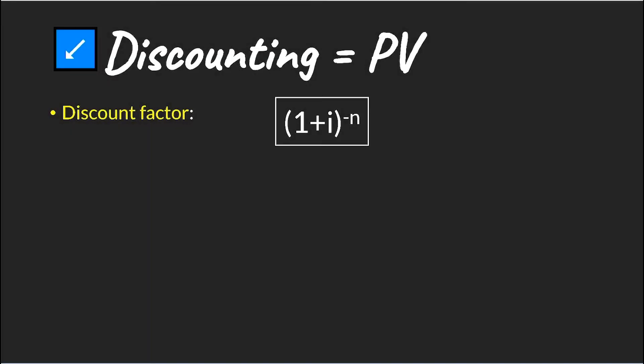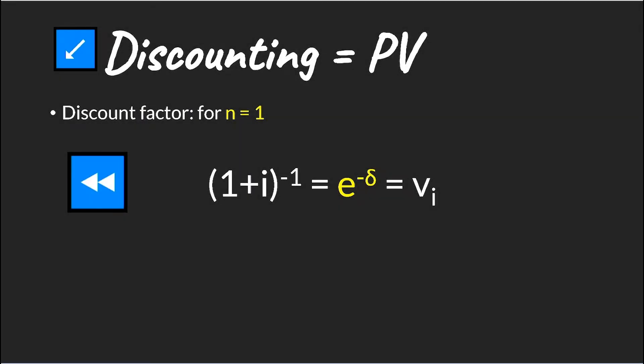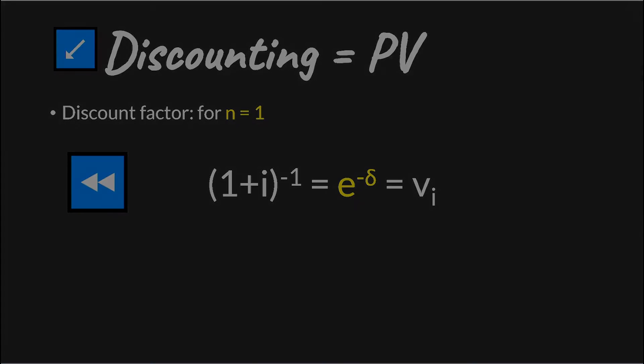In order to find the discount factor, we start off with what we already know. In other words, that our discount factor is the inverse of our accumulation factor. Similarly, for our V that we're used to using as a discount factor, we can easily show that as well.